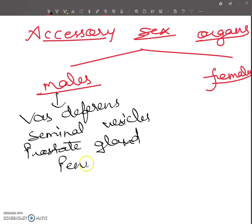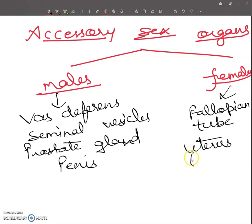And what about female? These are called fallopian tube, that is called oviduct also, and uterus where baby is born, baby develops in nine months, and last is vagina. So these all are the accessory sex organs.